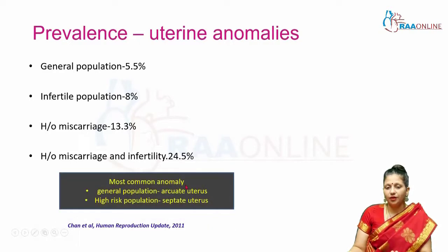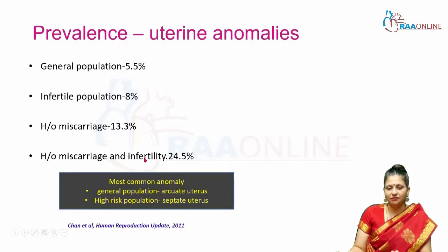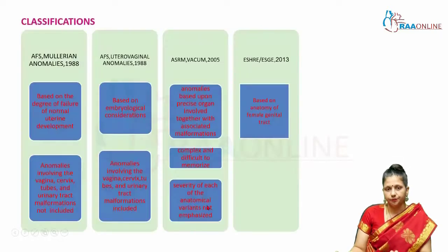The most common anomaly in the general population is the arcuate uterus, but it doesn't cause much reproductive failure. In the high-risk population with a history of miscarriages and infertility, the most common uterine anomaly is the septate uterus.